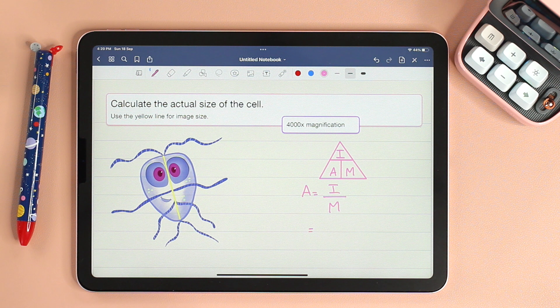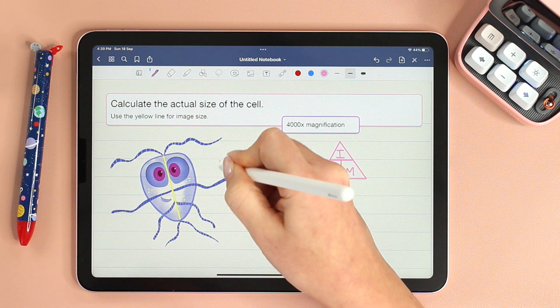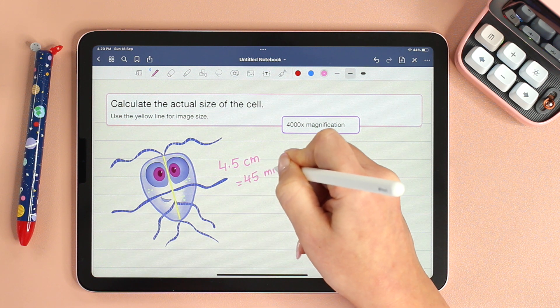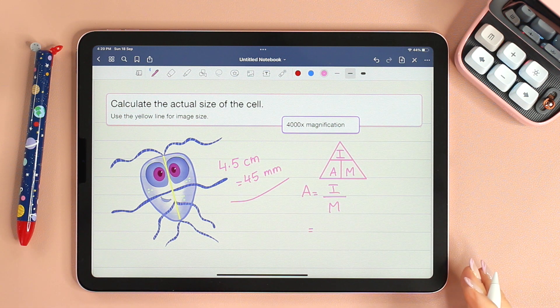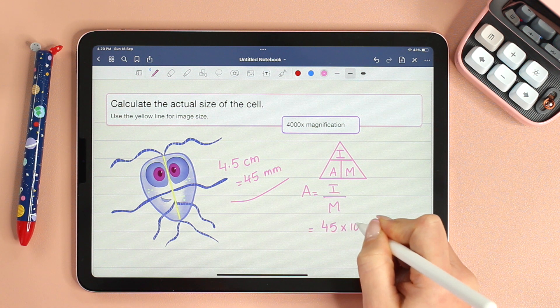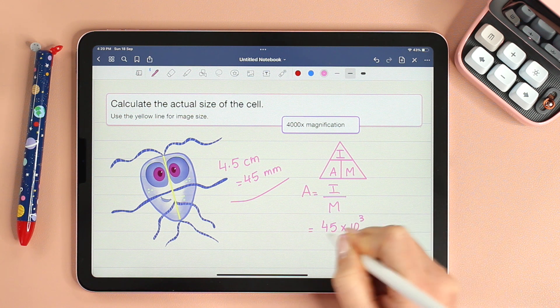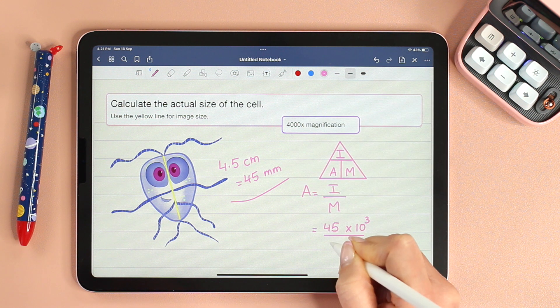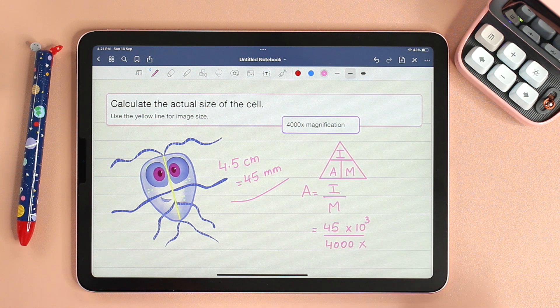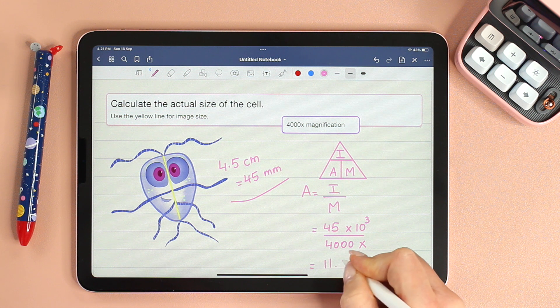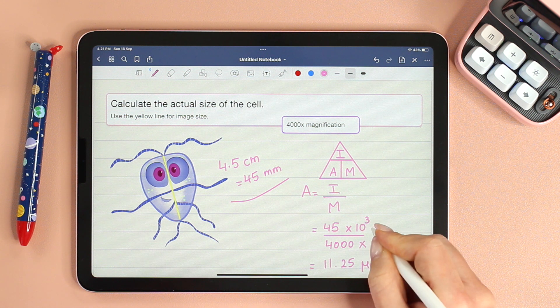read 4.5 centimeters. We agreed 4.5 centimeters is 45 millimeters. That's the first thing that I want you to do. As I copy 45 in the image size, multiply that by 10 to the power of 3 to get it in micrometers, divided by magnification, which is given—it's 4,000 times magnified. 45,000 divided by 4,000 is 11.25 micrometers.